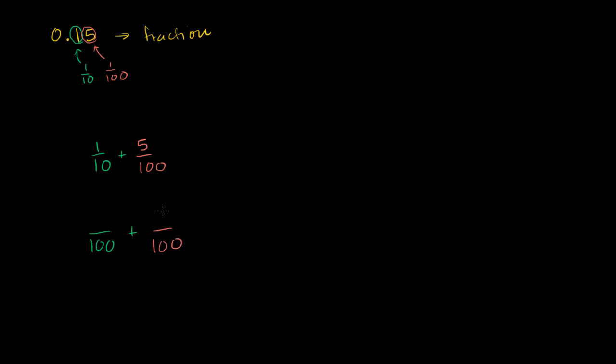This isn't going to change. This was already 5 over 100. If we multiply the denominator here by 10, that's what we did, we multiplied it by 10, then we're going to have to multiply this numerator by 10. And so this is the same thing as 10 over 100, and now we're ready to add.